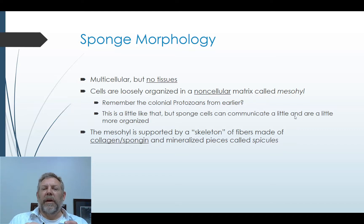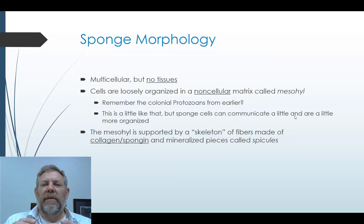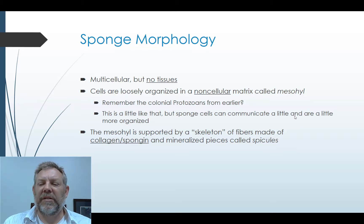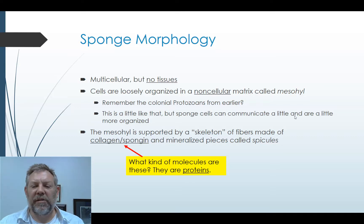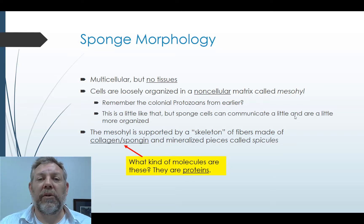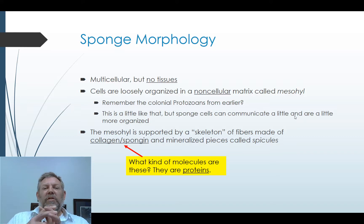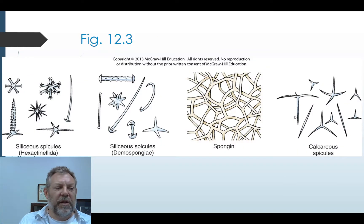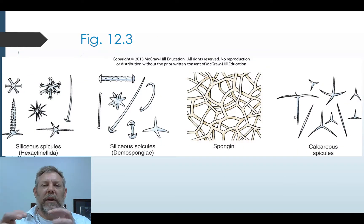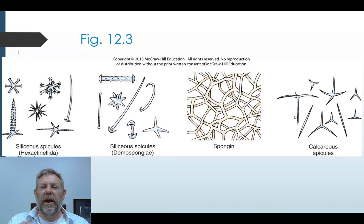The mesohyl is made of something called spongin or collagen, and that is supported by these mineralized pieces called spicules. Collagen is a protein, and spongin is a similar protein found only in the Porifera. You've got this tough protein with spicules embedded in it. The spicules are inorganic — they're little mineralized pieces. You can see examples of spicules and the fiber formed by the spongin. Think of the texture of a sponge: it's tough but flexible.